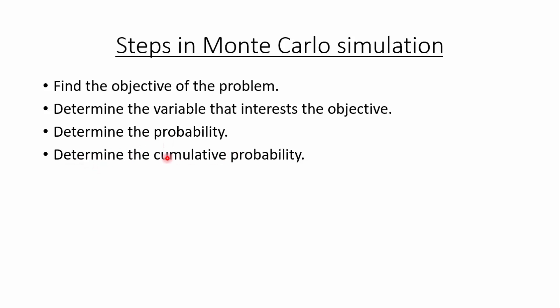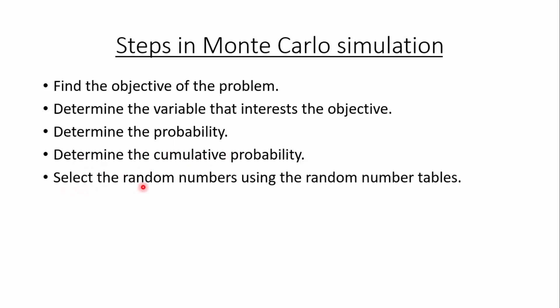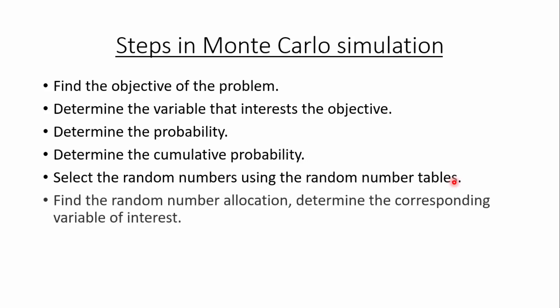After finding the probability, we need to determine the cumulative probability. The next step is to select the random numbers using random number tables. In Monte Carlo simulation problems, random numbers are usually given in the problem; if not, we use random number tables. After selecting the random numbers, we need to find the random number allocation — identifying which random number interval the selected numbers fall into.